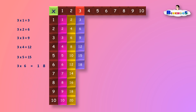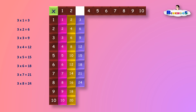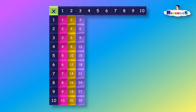3 times 6 is equal to 18. 3 times 7 is equal to 21. 3 times 8 is equal to 24. 3 times 9 is equal to 27. 3 times 10 is equal to 30. Multiplication of 4.